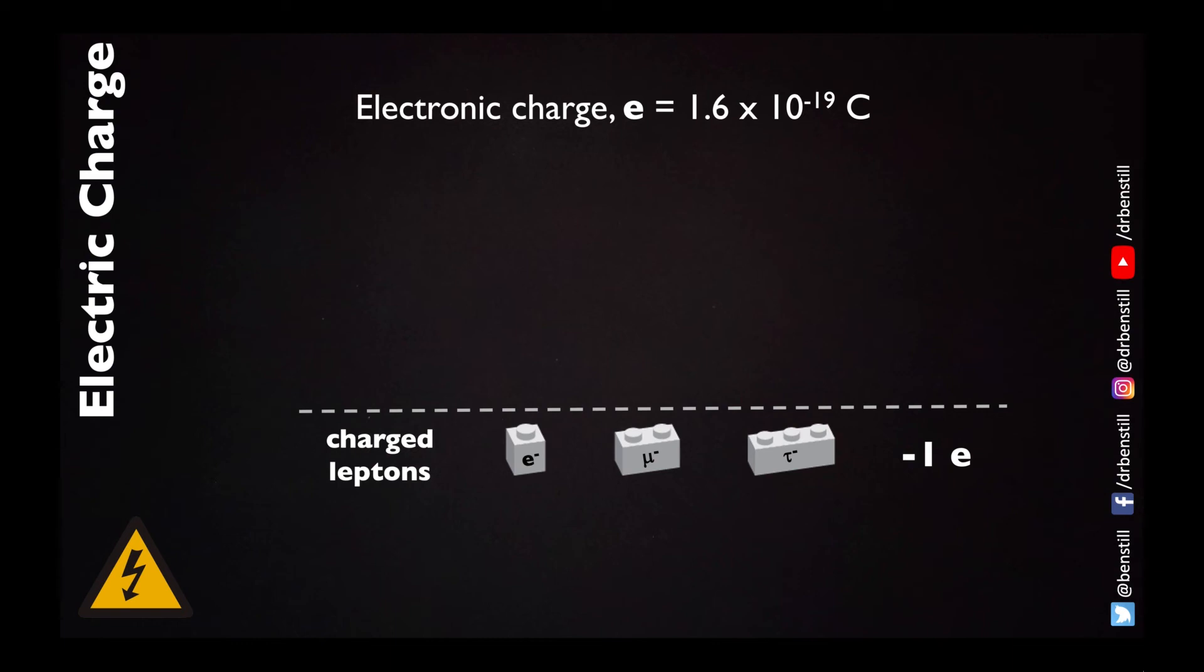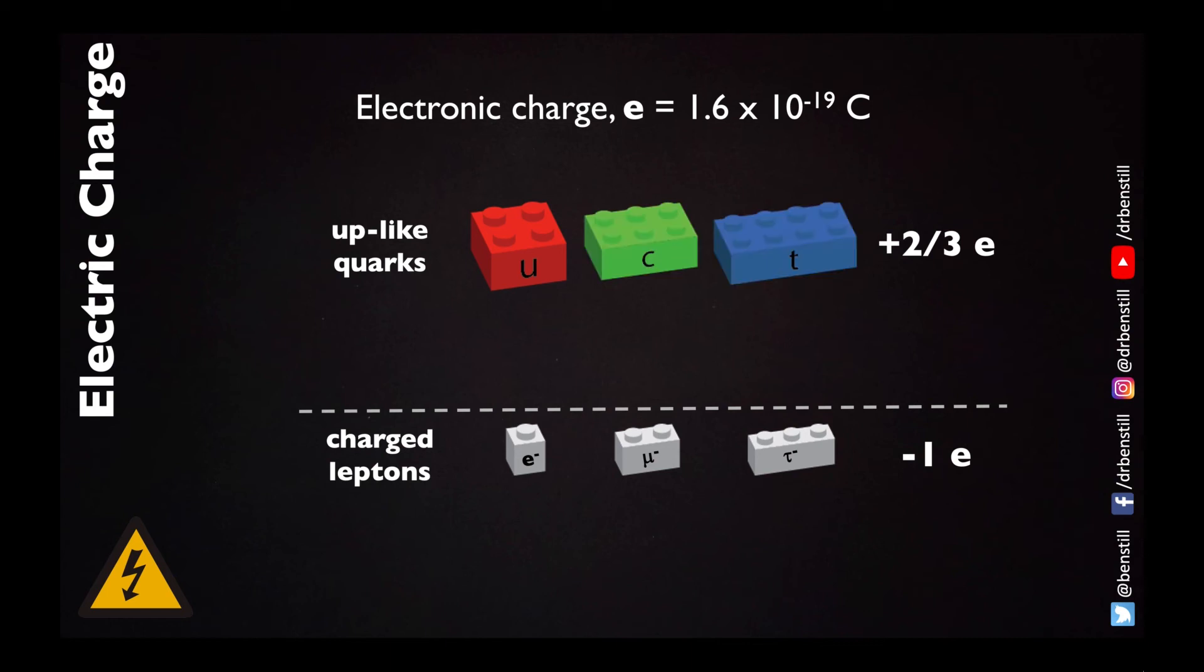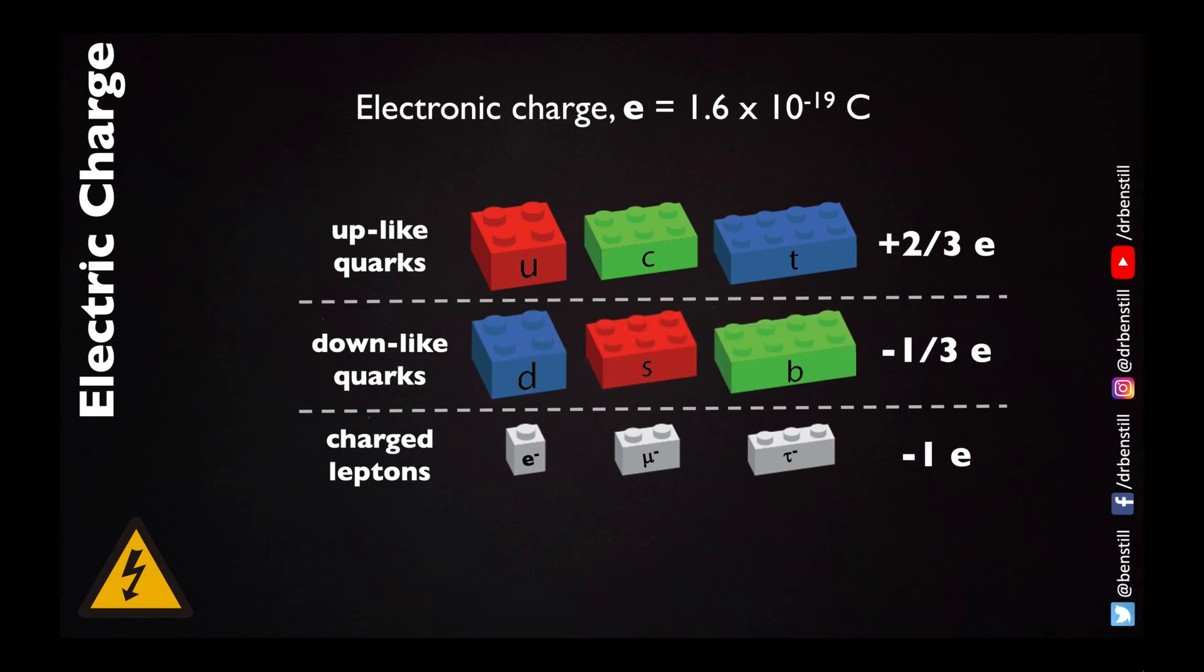Because the quarks combine together in groups of three to make particles, they have slightly different fractional amounts of this electronic charge. The up-like quarks—the up, the charm, and the top—all have positive two-thirds of the electronic charge. While the down and its heavier versions, the strange and the bottom, have minus one-third of that electronic charge. The neutrinos have zero electric charge. They don't interact at all with the electromagnetic force.